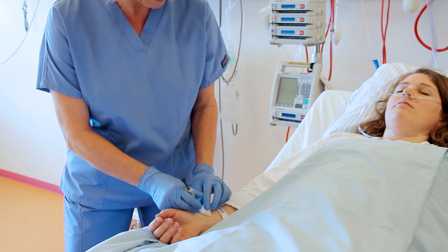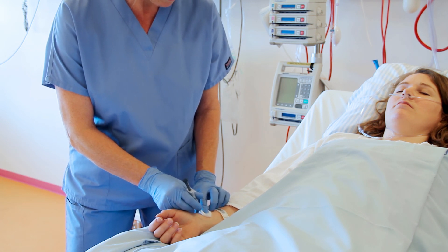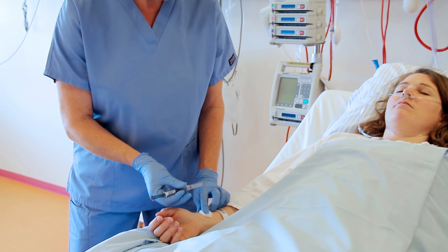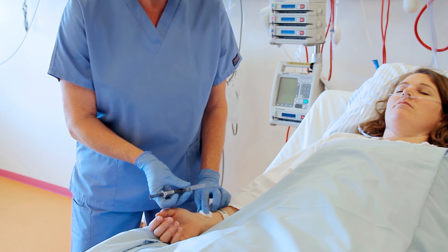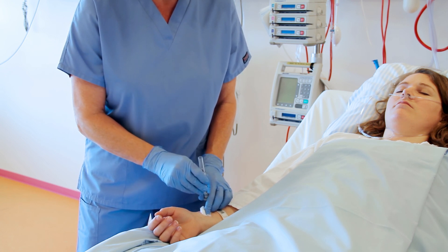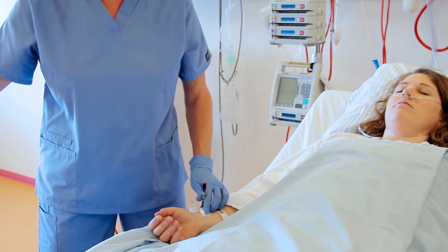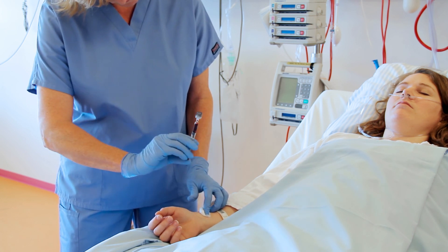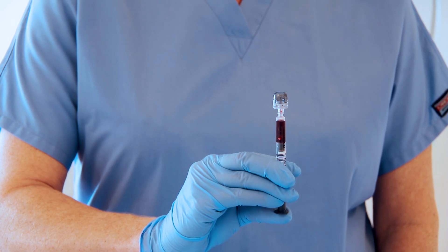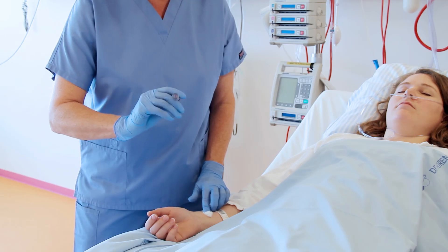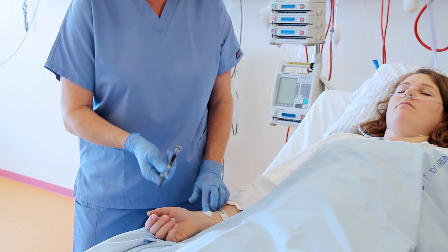Withdraw the needle and apply pressure to the puncture site. Remove the needle using a safety device. Gently tap the syringe so that air bubbles are forced to the top. Expel air bubbles through the tip cap or into a piece of gauze. Mix the sample thoroughly to dissolve the heparin.